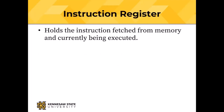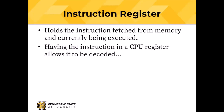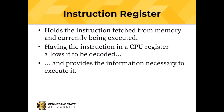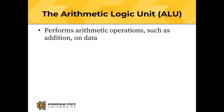The instruction register holds the actual instruction bits fetched from memory. Having the instruction bits in the CPU is necessary in order to decode that instruction and provides the information necessary to execute it. Often instructions need to not only specify what the CPU should do but also specify the data that should get operated on.